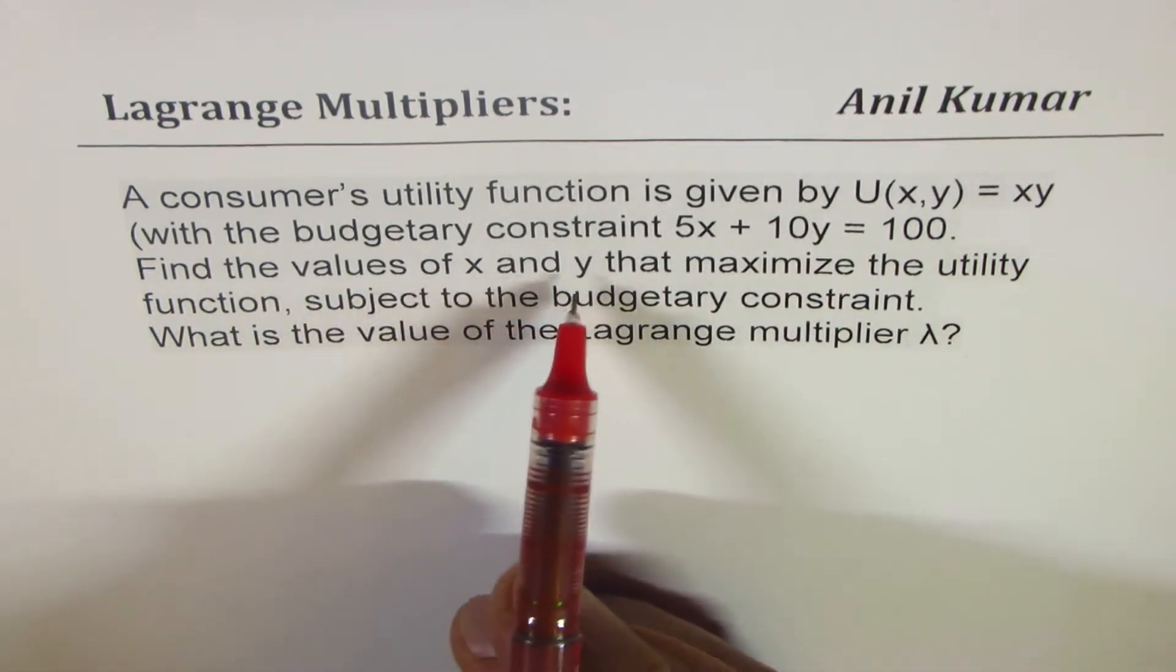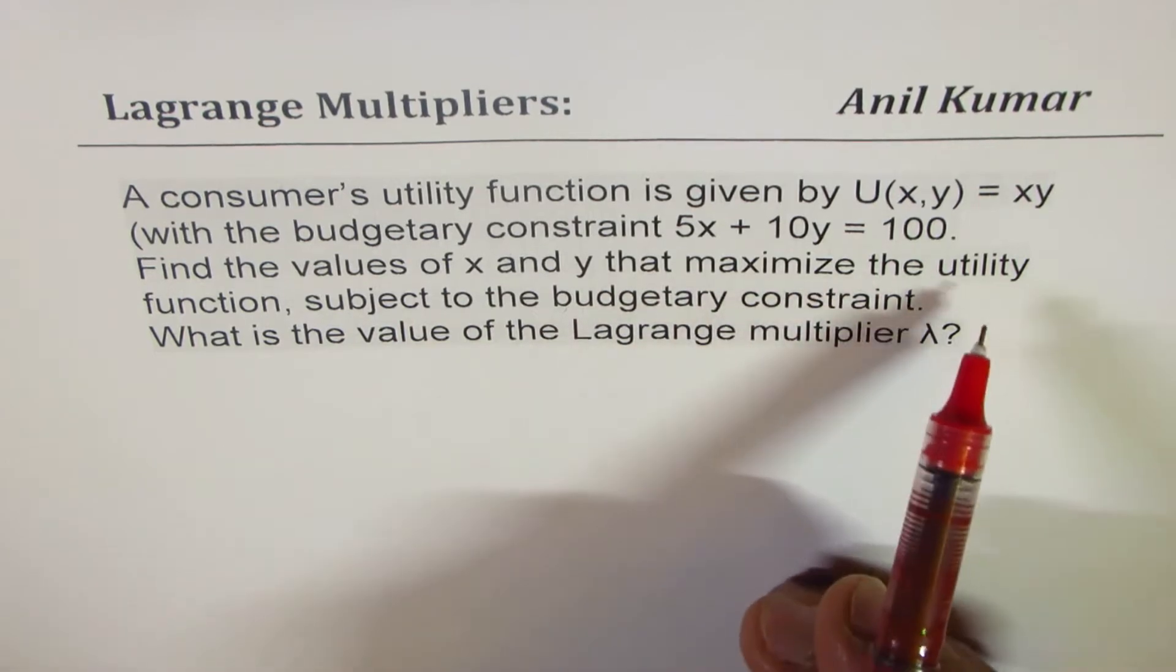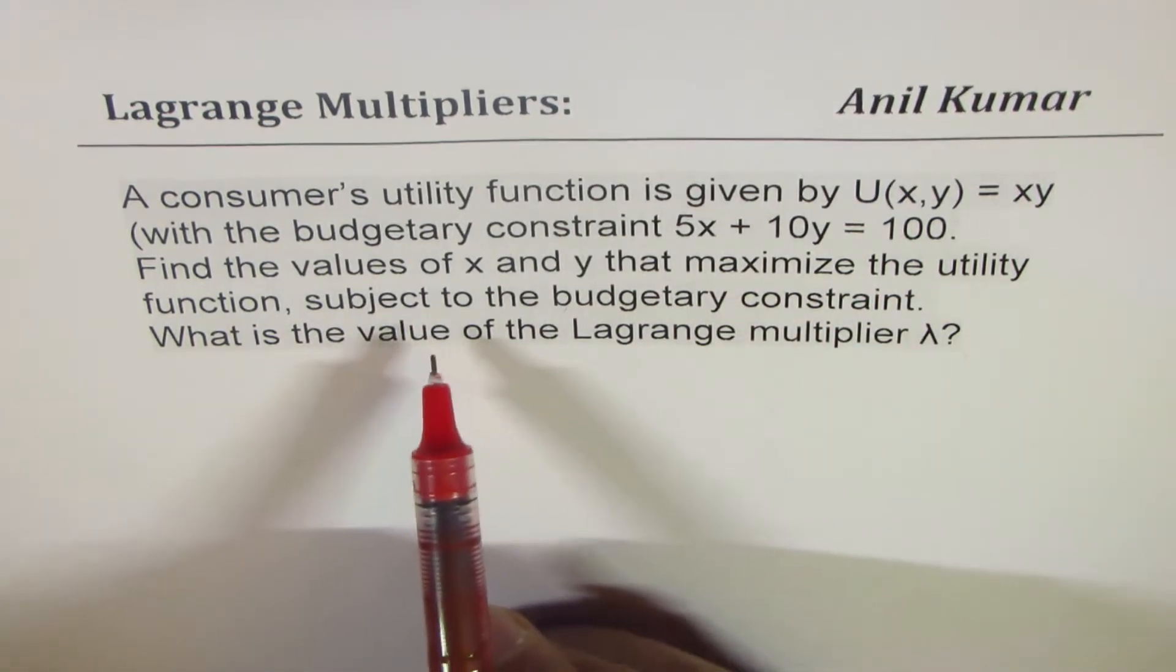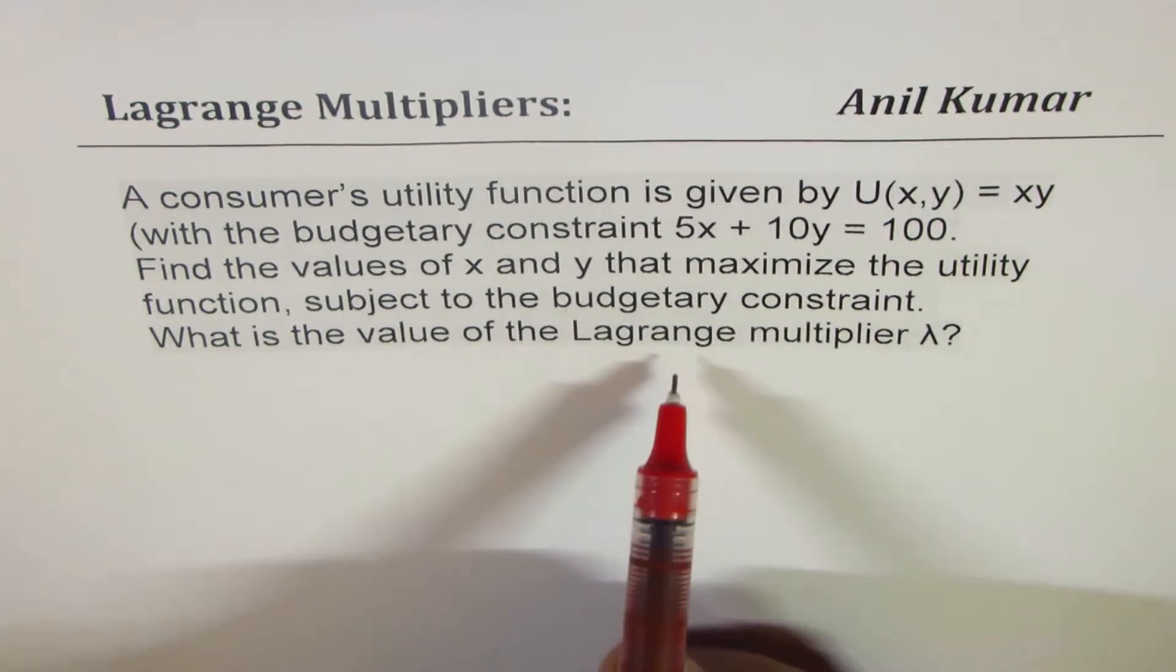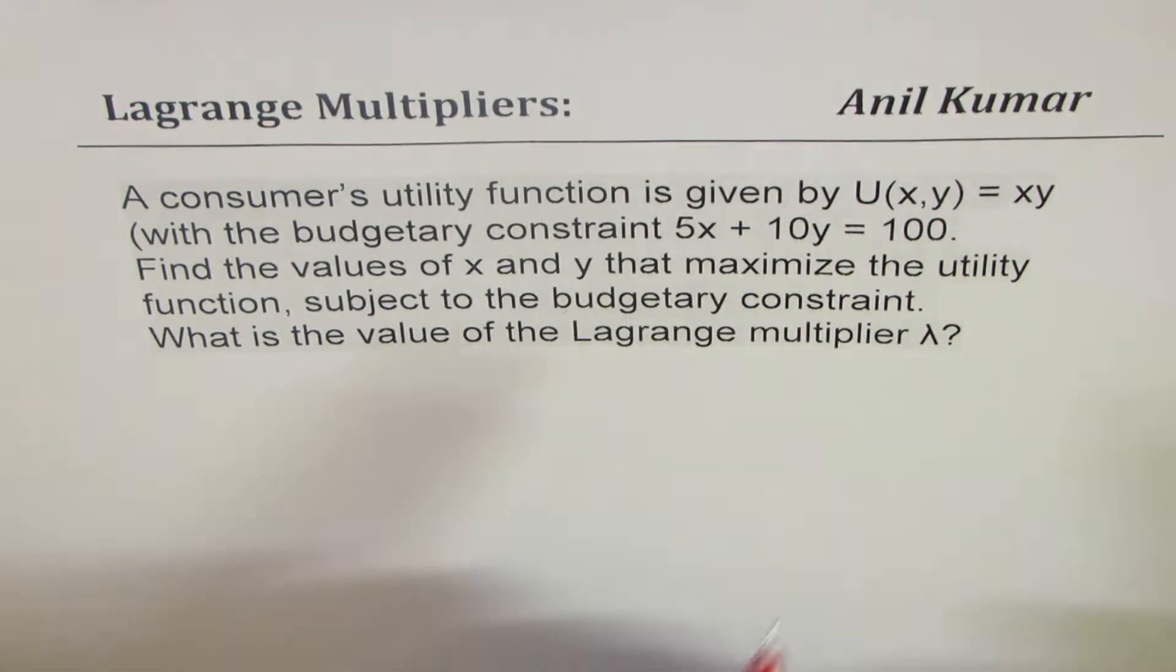Find the values of x and y that maximize the utility function subject to the budgetary constraint. What is the value of Lagrange's multiplier lambda?